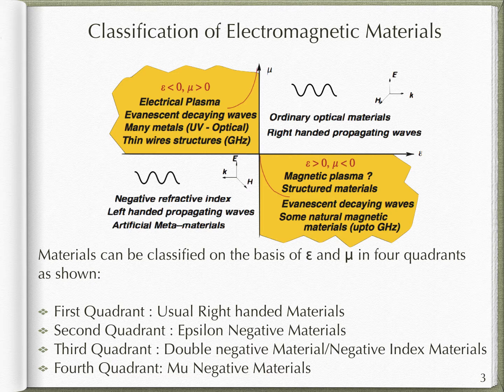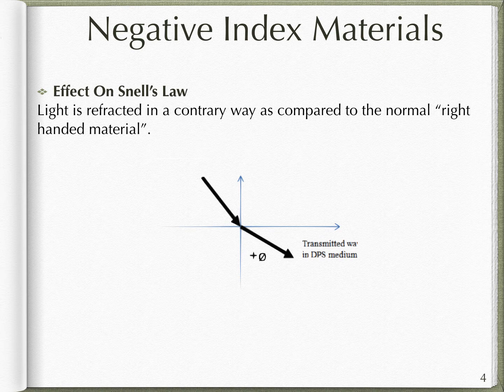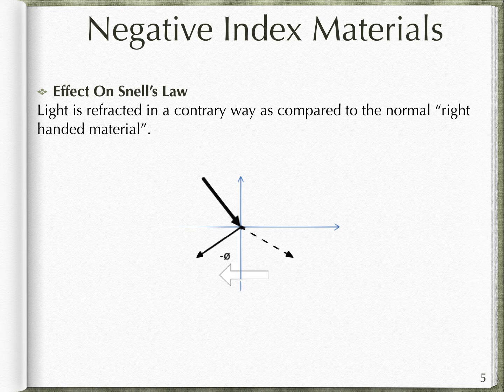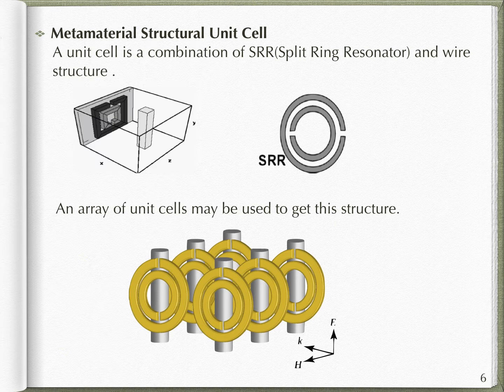What is the effect of negative refractive index materials on Snell's law? When light comes in contact with a naturally occurring material such as glass or water, it always bends at a positive angle as they have a positive refractive index. However, by using a small amount of metals with a carefully designed structure, light would bend at a negative angle, showing that they have a negative refractive index. A metamaterial structural unit cell is a combination of SRR, split ring resonator, and wire structure.